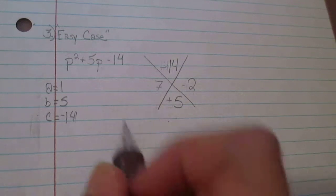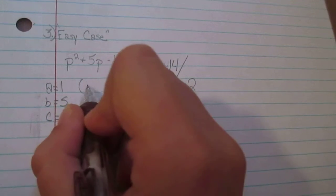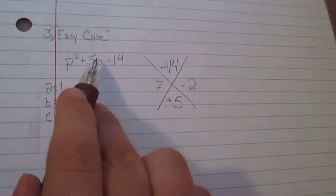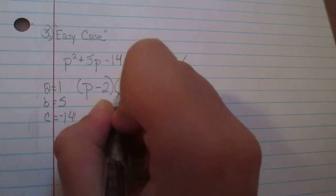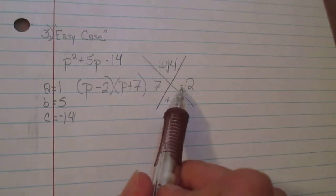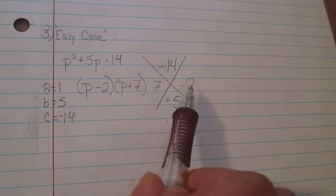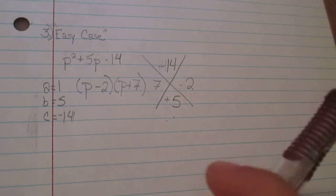So now what we're going to do is we're going to break down this 5p and then we're going to do (p - 2) and then (p + 7). And you keep the assignment whether it's positive or negative from the diamond method.